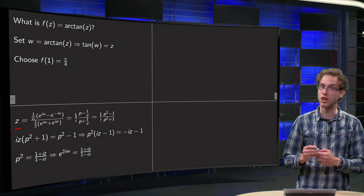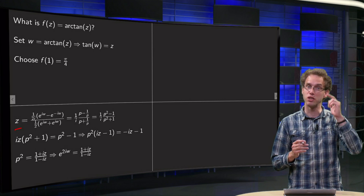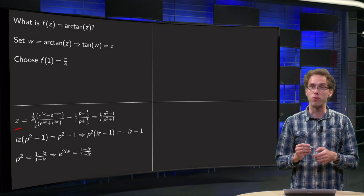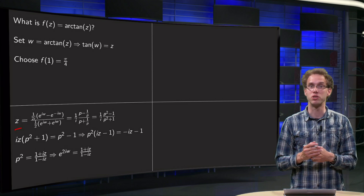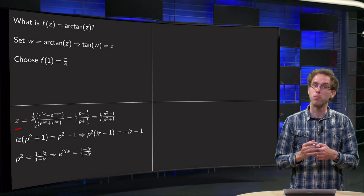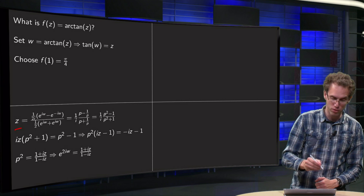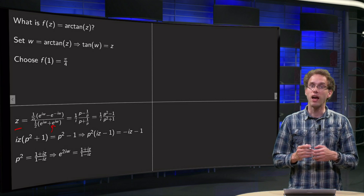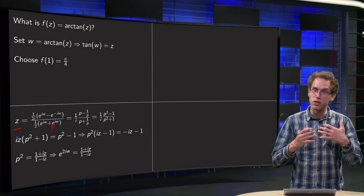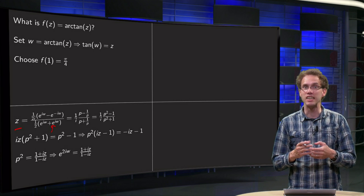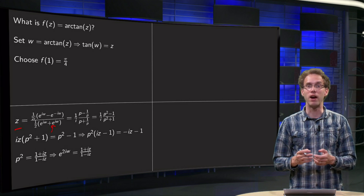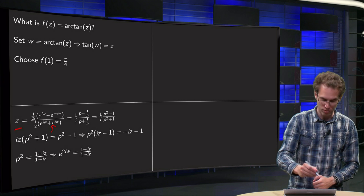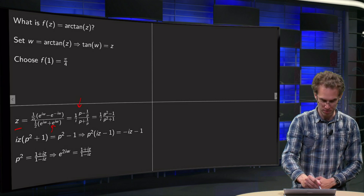So z equals sine over cosine: sine equals e to the power iw minus e to the power minus iw over 2i, and cosine equals e to the power iw plus e to the power minus iw over 2. And we want to solve for w, so the trick is here — we have e to the power iw and e to the power minus iw — to set p equals e to the power iw, so we get a p in both places.